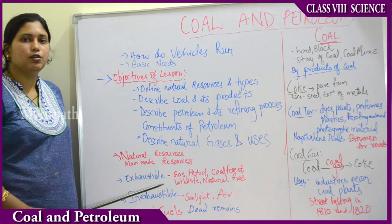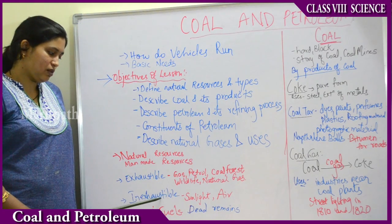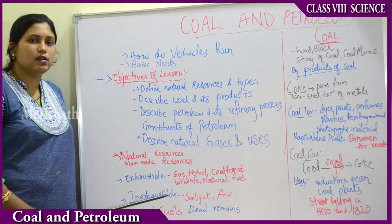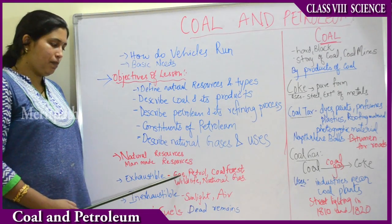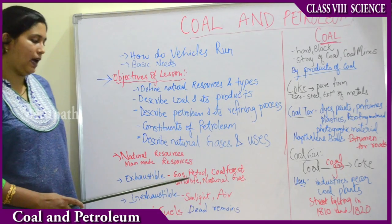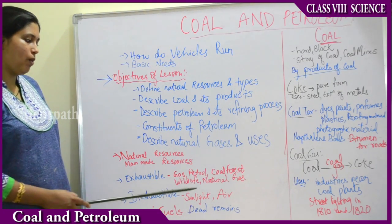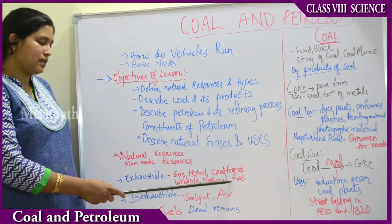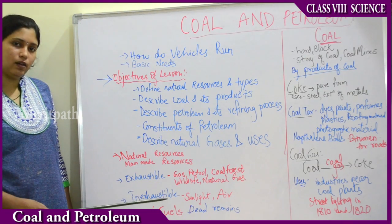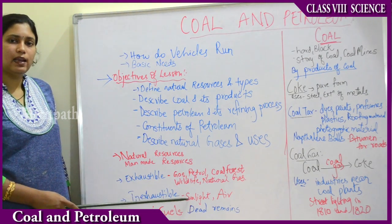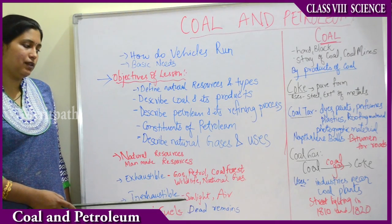Exhaustible means due to human activity they can get exhausted. Inexhaustible means they will never get exhausted by human activities. Examples of exhaustible resources are gas, petrol, coal, forests, wildlife, and natural gas. Wildlife means all the animals. Examples of inexhaustible resources are sunlight and air — these are freely available and will never be exhausted by human activity.